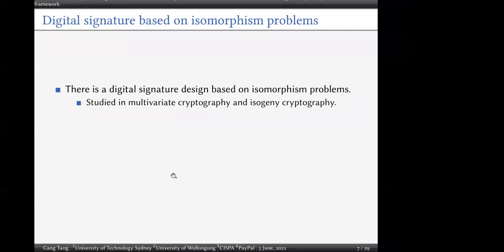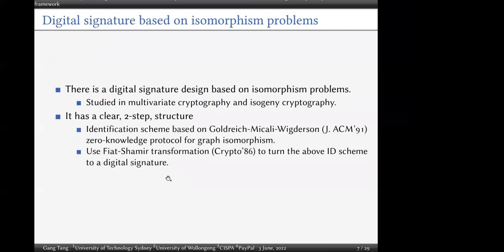From these isomorphism problems, we can design a digital signature. This is studied in multivariate cryptography and isogeny cryptography. The construction has two steps: first, construct an identification scheme based on the Goldreich-Micali-Wigderson zero-knowledge protocol for graph isomorphism; then apply the Fiat-Shamir transformation to turn this identification scheme into a digital signature.